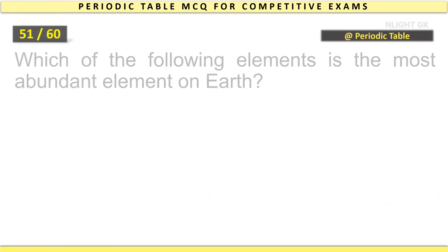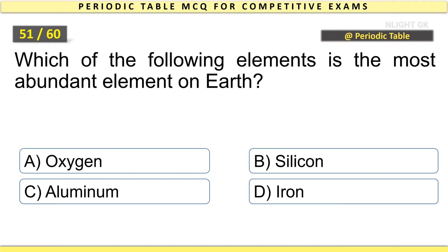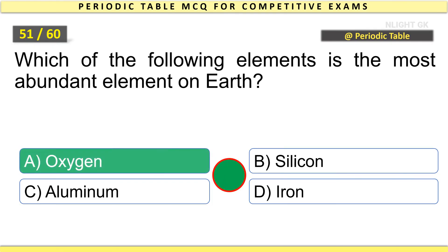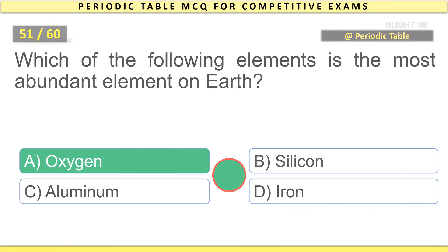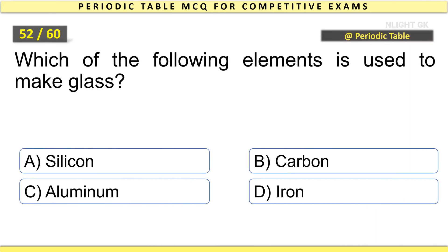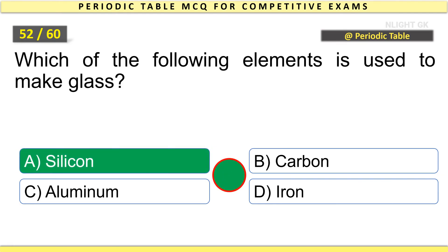Which of the following elements is the most abundant element on earth? Oxygen. Which of the following elements is used to make glass? Silicon.